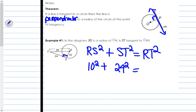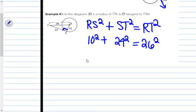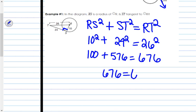Equals RT, 26 squared. 10 squared is 100. 24 squared is 576. And 26 squared is 676. 100 plus 576 is 676. And 676 does, in fact, equal 676.